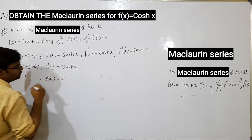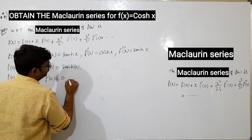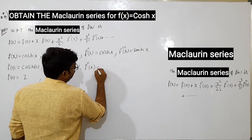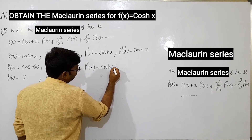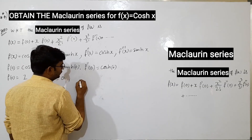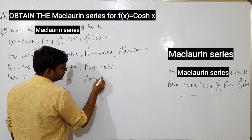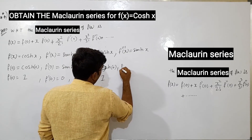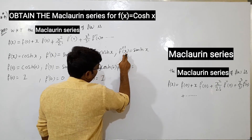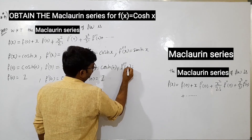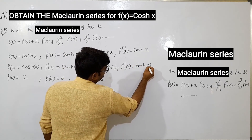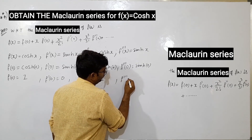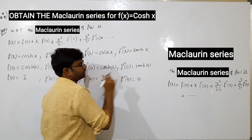Next, f''(x): taking a single derivation and then a double derivation — cosh(x) putting zero gives cosh(0) = 1, so f''(0) = 1. Next, f'''(x): putting zero gives sinh(0) = 0 from the trigonometry table, so f'''(0) = 0.